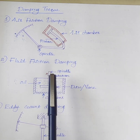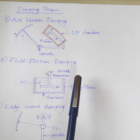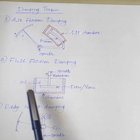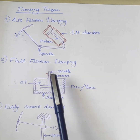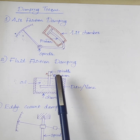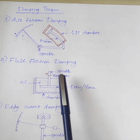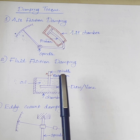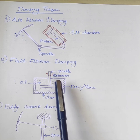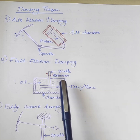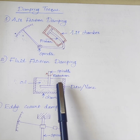The next type is fluid friction damping, which is similar to air friction damping, except that air is replaced by oil. Oil is more viscous than air, and hence the damping force will increase.